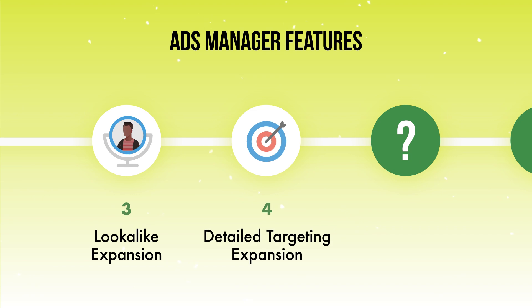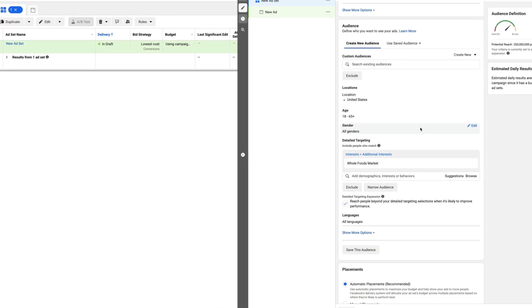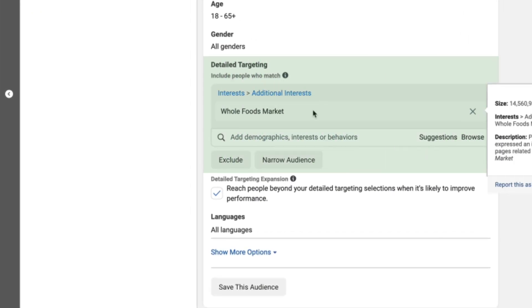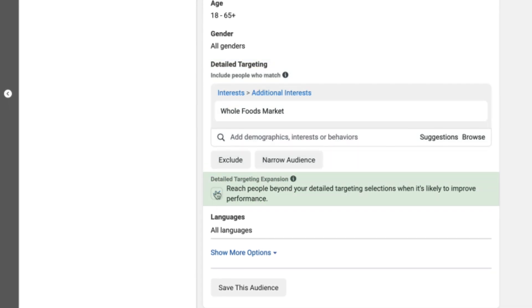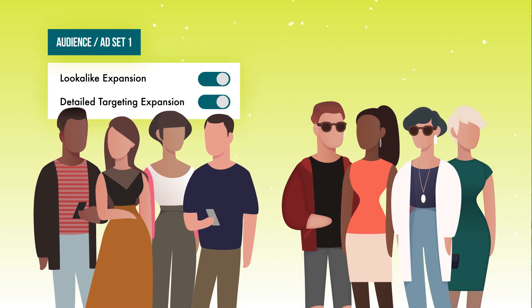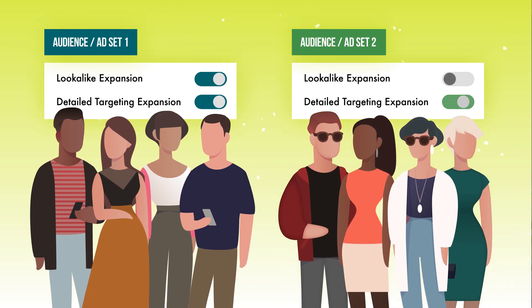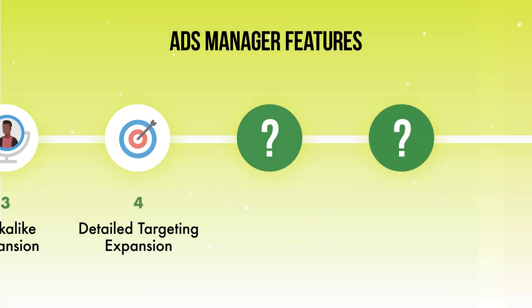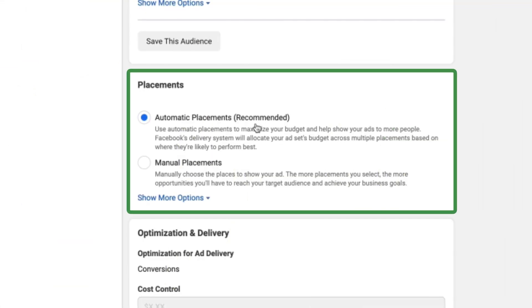Another button people often ask about is Detailed Targeting Expansion. If you're targeting an audience in detailed targeting and you click this button, it will expand the audience to other people who might also be interested in your ads. For both expansion buttons, I recommend running one ad set with expansion on and one with it off, so you can compare apples to apples and see how these buttons are working for you.